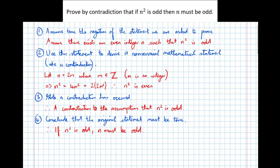Now let's analyse exactly what we did. The question asked us to prove by contradiction that if n squared is odd then n must be odd. We actually assumed the opposite was true — that there exists an even integer n such that n squared is odd. You could fall into the trap of thinking the opposite was 'if n squared is odd then n must be even,' but that's not the case. The opposite is the counterexample that disproves it.